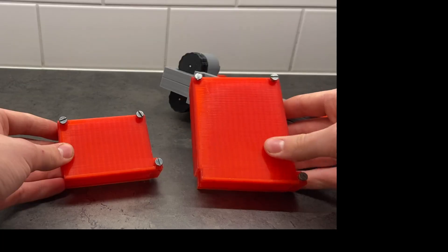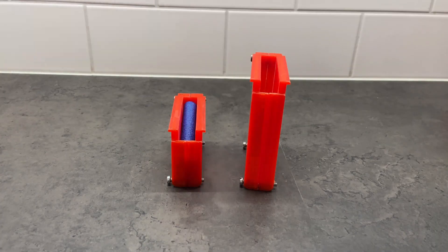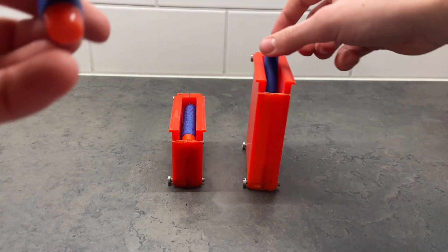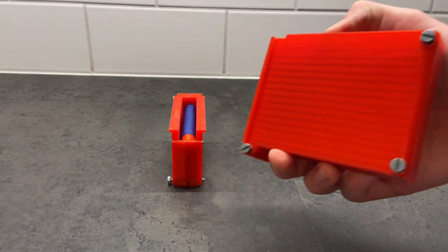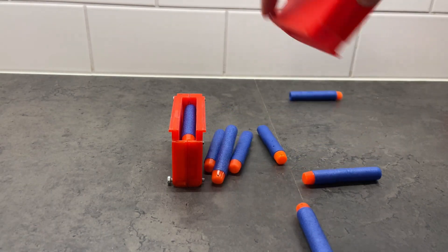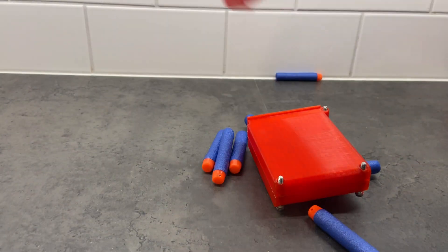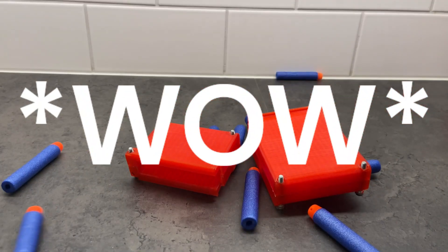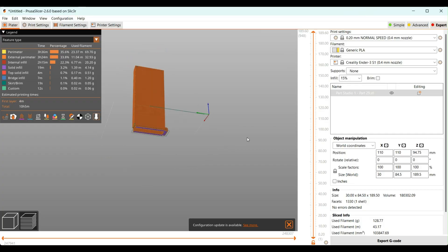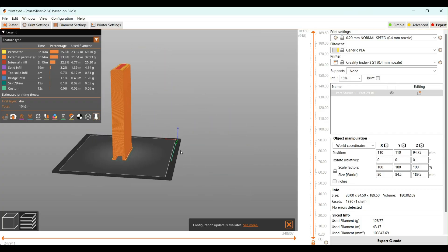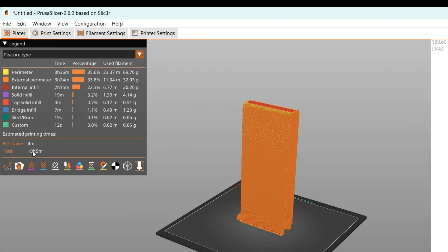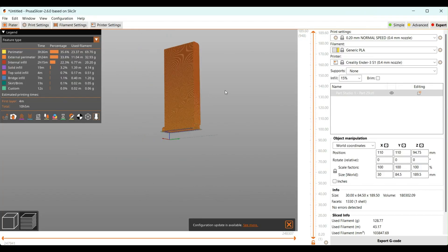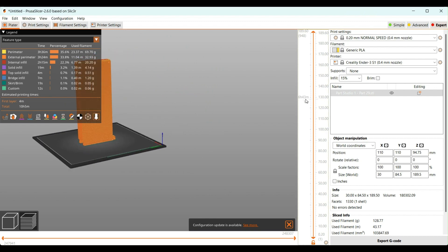But I also printed out a bigger magazine which can hold 7 darts instead of the 3 darts which the smaller can hold. Which is quite a big improvement. Look at all those darts. I thought about making an even bigger magazine which could hold 15 darts or something. But it would take 10 hours. So I couldn't do it guys. Sorry. 10 hours is too long.